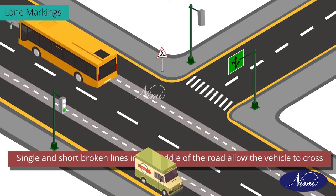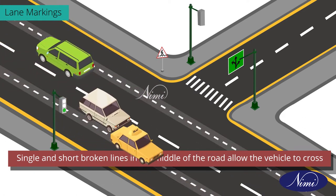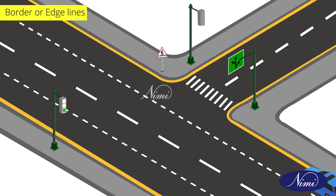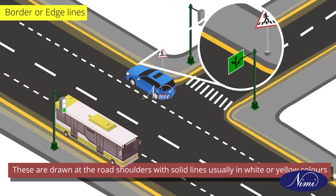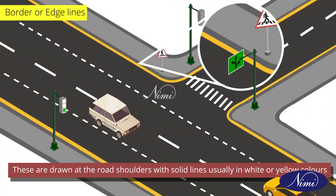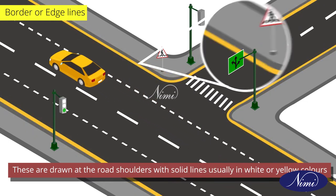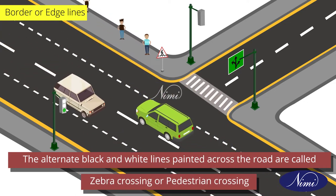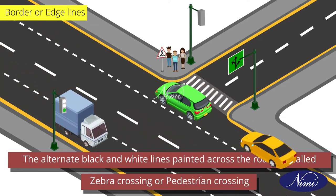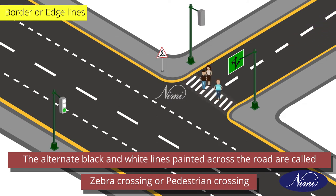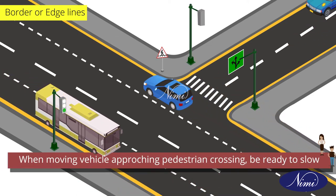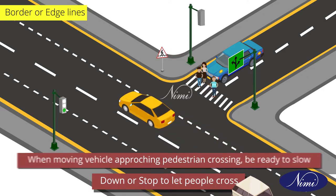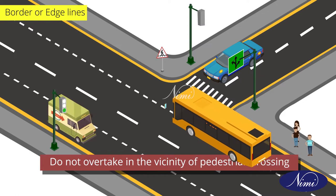Single and short broken lines in the middle of the road allow the vehicle to cross the dotted line safely or overtake whenever required. Border or edge lines are drawn at the road shoulders with solid lines usually in white or yellow colors. The alternate black and white lines painted across the road are called zebra crossing or pedestrian crossing. When moving vehicles approach near the zebra crossing, be ready to slow down or stop to let people cross. Do not overtake in the vicinity of the pedestrian crossing.